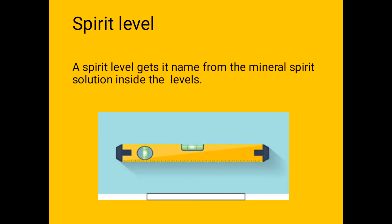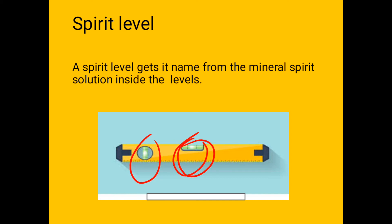Why is it called a spirit level? A spirit level gets its name from the mineral spirit solution inside the levels. You can see here it has two tubes. In these two tubes, there is a spirit solution — ethanol can also be another solution — which helps us to determine whether surfaces are level.